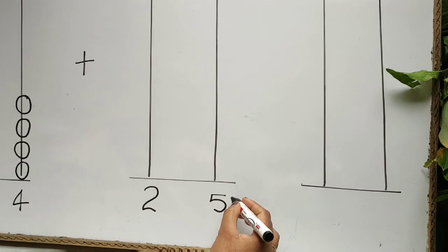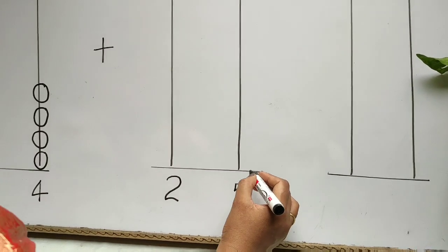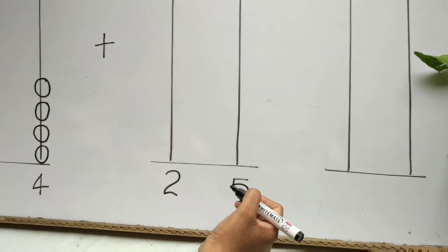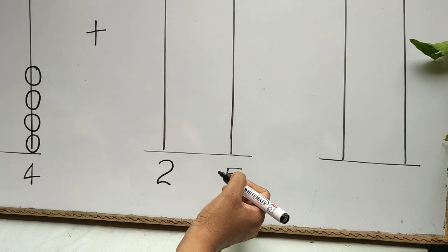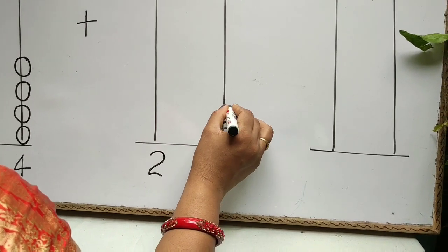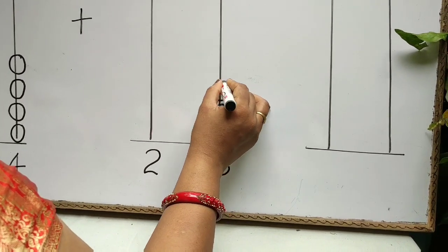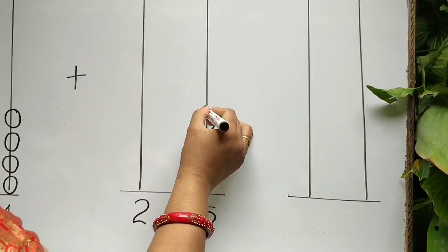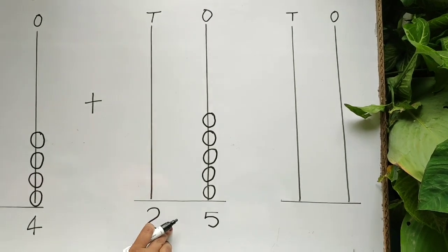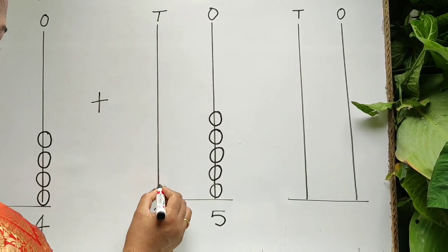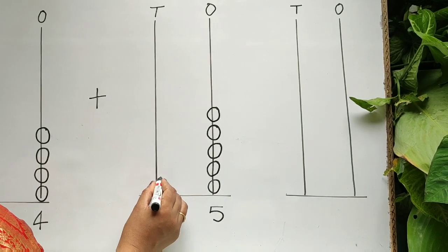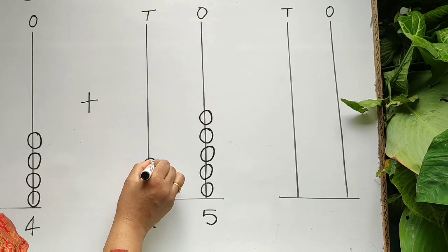Now we will draw beads on the ones rod. How many beads will we draw? Five. One, two, three, four, five. And next, two beads on the tens rod: one, two.